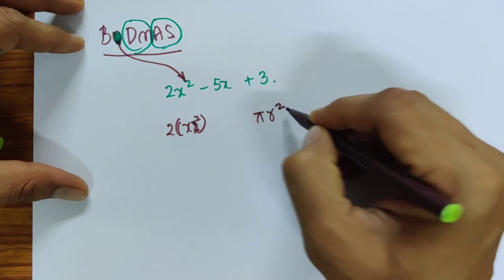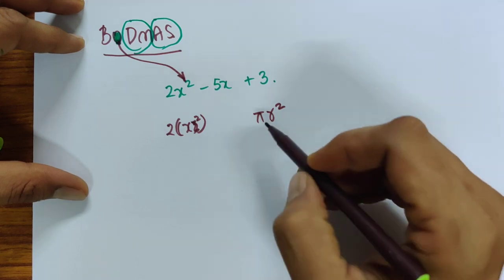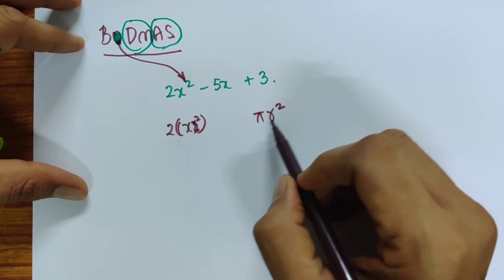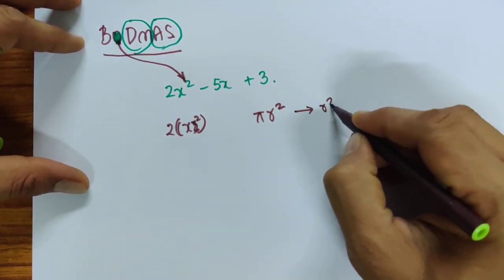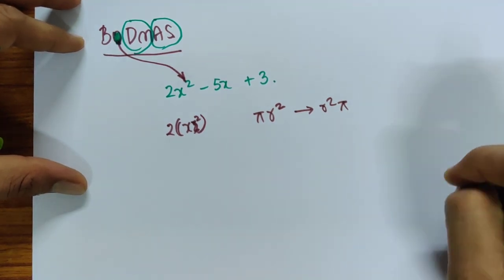Otherwise it would be very hard to write expressions. If you wrote pi r square as the area of a circle and you had confusion whether pi has to be multiplied by r first or squared first this expression would be quite hard to write. You would need to start writing as r square pi and even then there are cases when this would not really quite work out.